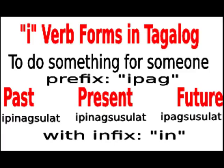An E-verb is used only when an active um or mag verb has a direct object in a sentence. First sentence pattern: when the E-verb has an active form in um, the indirect object introduced by the prepositions sa, para sa, kay, and para kay becomes the subject. Example: Bumili ng isda ang babae para sa kanyang ina. Ibinili ng babae ng isda ang kanyang ina. The woman bought fish for her mother. Bumasa ng aklat ang guro para kay Joe. Ibinasa ng guro ng aklat si Joe. The teacher read a book for Joe.